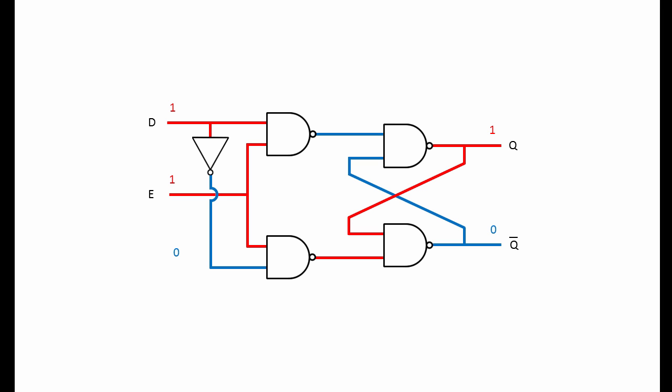You can see that while E is high, Q is always the same as D. And because we're using a NOT gate like this, there's no possibility of the D latch ever ending up in a forbidden state, like an SR latch might.